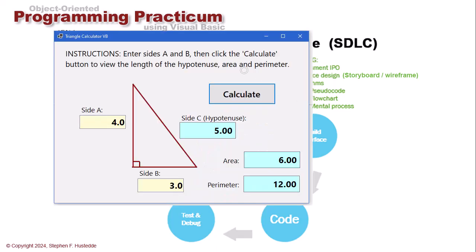Then I test again. This time when I click Calculate, I get the correct answer of 5.00 with side A of 4 and side B of 3. The area is 6, and the perimeter — 4 plus 3 plus 5 — is 12. My program now displays the correct result. I want to test with more data to make sure, especially using decimal numbers like 4.5 and 2.75. This process of testing and debugging may take several iterations, because fixing one error may reveal another. Every programmer deals with errors — even the most seasoned of us. It's just part of being a coder, and it's really important to test thoroughly, because if you distribute an application that doesn't work correctly, you have an unhappy client and you lose business.